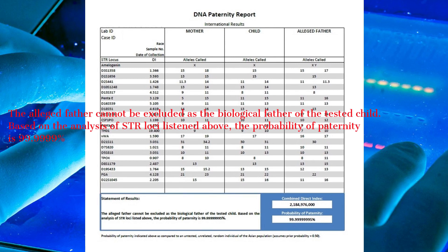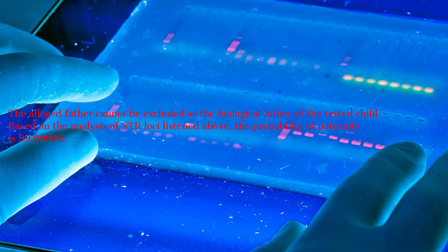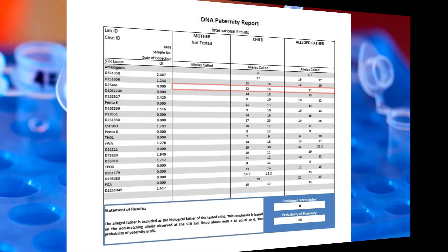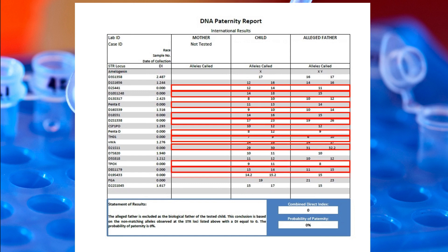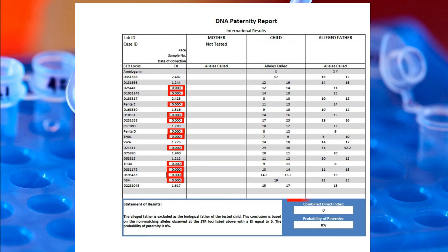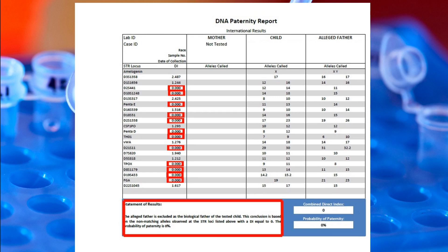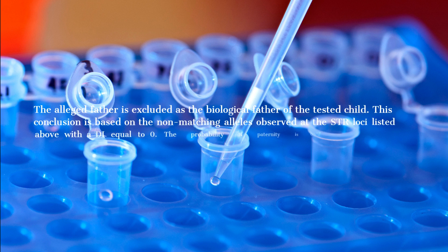Conversely, if the tested father is not the child's biological father, the result will be exclusion of paternity. The probability of paternity in this case would be zero percent, and the statement of results will read: 'The alleged father is excluded as the biological father of the tested child. This conclusion is based on the non-matching alleles observed at the STR loci listed above, with a DI equal to zero. The probability of paternity is zero percent.'